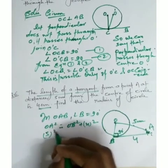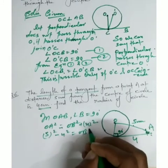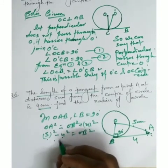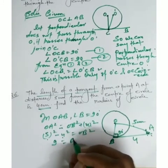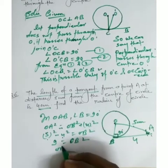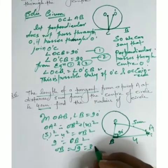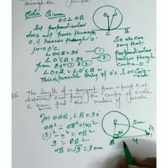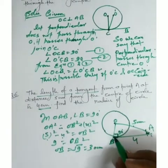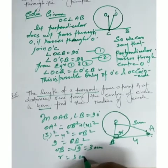So 5 square minus 4 square equals OB square. That gives 25 minus 16 equals 9, so OB square equals 9. Therefore OB equals under root 9, which is 3 cm. This is the answer — the radius OB equals 3 cm.